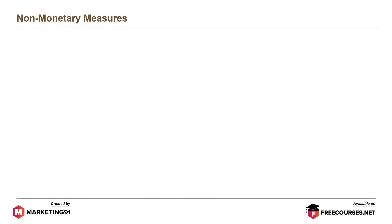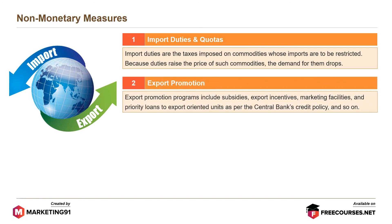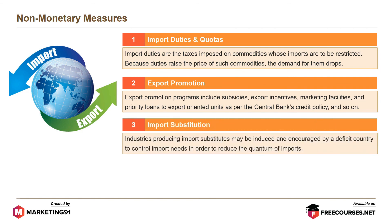Under non-monetary measures, import duties and quotas are taxes imposed on commodities whose imports are to be restricted. Because duties raise the price of such commodities, demand for them drops. Export promotion programs include subsidies, export incentives, marketing facilities and priority loans to export-oriented units as per the central bank's credit policy. The last measure is import substitution, where industries producing import substitutes are encouraged by a deficit country to control import needs and reduce the quantum of imports.